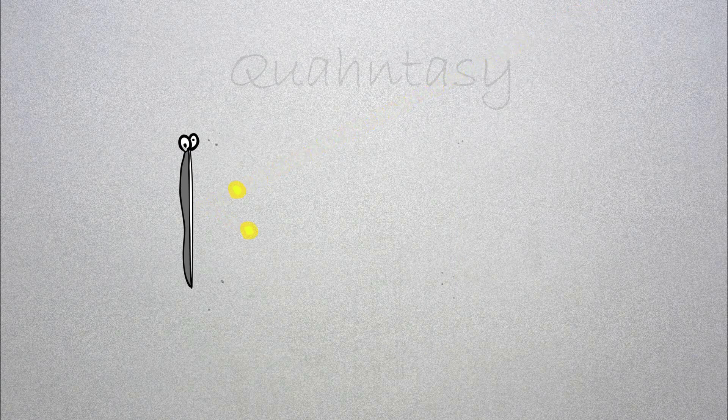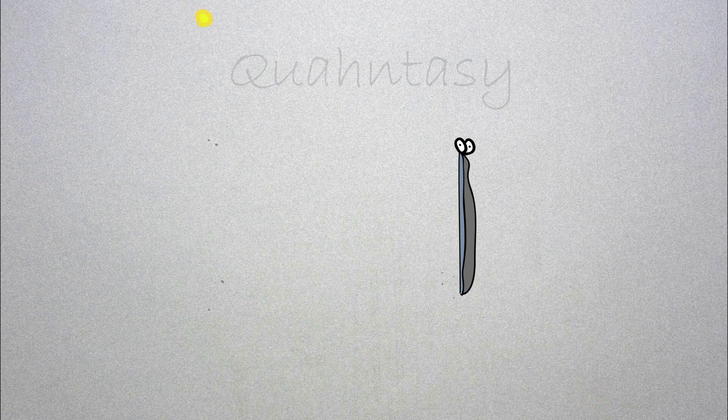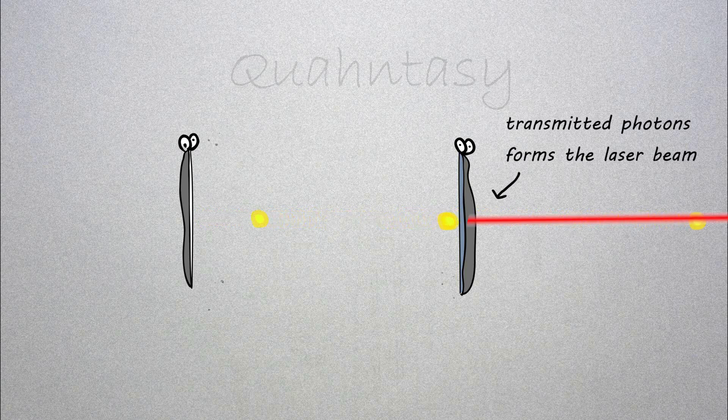Here's what I mean by that: a photon comes in, hits this mirror, and it goes back like it should under laws of reflection. A photon comes in and hits this mirror—it can reflect back, but there is a small chance that this photon is actually transmitted. These transmitted photons form a laser beam. We will come back to this in a bit.